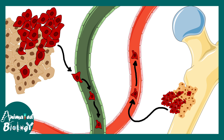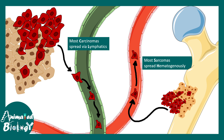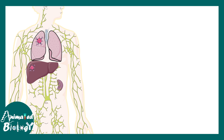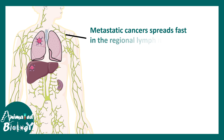Most carcinomas spread via lymphatics, whereas most sarcomas spread hematogenously through the blood vessels. When we talk about organs affected by metastatic processes, the first thing that gets affected is the lymph node. Next, liver and lung are the most common sites for metastasis.